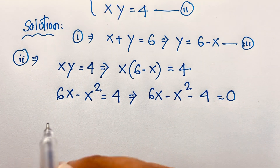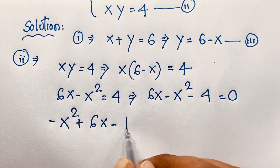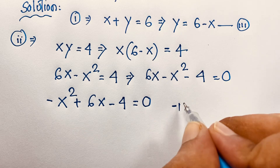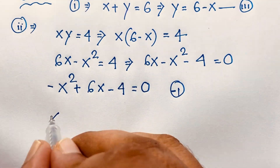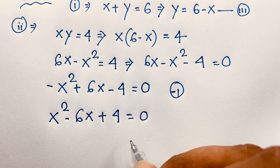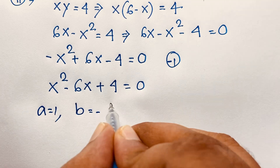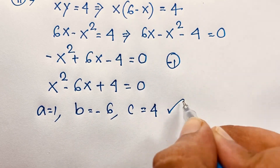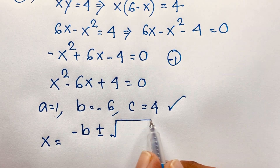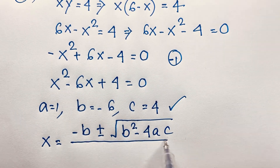This quadratic equation is: negative x squared plus 6x minus 4 is equal to 0. If I multiply both sides by negative 1, we get x squared minus 6x plus 4 is equal to 0. So we have a nice quadratic equation where a is equal to 1, b is equal to negative 6, and c is equal to 4. Then x equals negative b plus or minus square root of b squared minus 4ac, all over 2a.